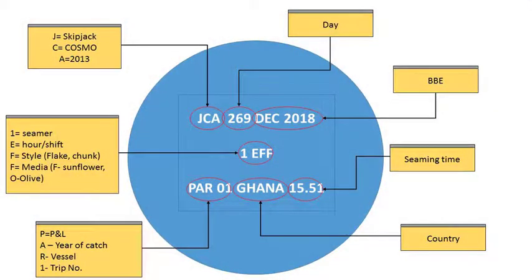Here is an example similar to the can being handed around — this is the data found on the end of a can of tuna, written on it by the business operator. You can see some things you might recognise: Ghana — a fair assumption it was produced there — December 2018, probably a best before date, but all the other letters and numbers are meaningless unless you have the coding system.